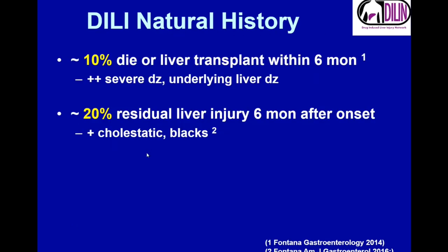From this 15-year natural history study, about 10% of people will die or get a liver transplant within six months of developing DILI. Predictors of poor outcome include worse labs at presentation and preexisting liver disease — a growing problem in the U.S. given the epidemic of diabetes and non-alcoholic fatty liver disease. About 20% of people still have ongoing liver injury six months after they first presented; in our cohort, those with cholestatic injury and African-Americans were more prone to have this. Our real reason to initiate this network was to understand the mechanism so that we can predict and or prevent this entity.